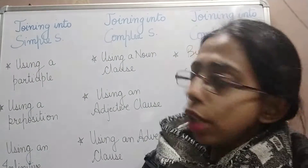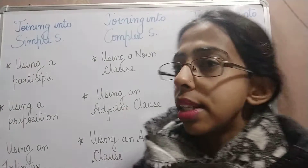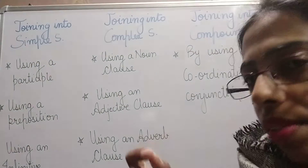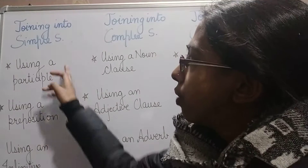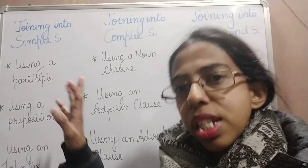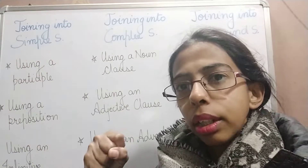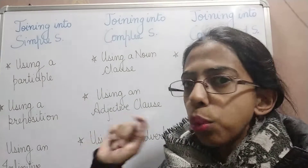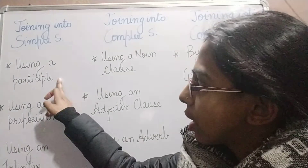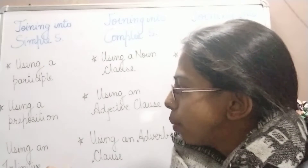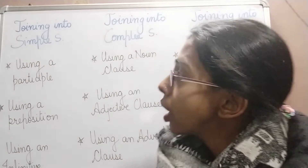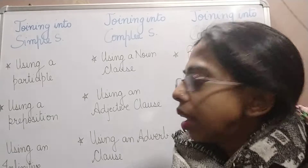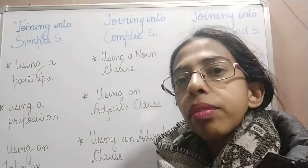First, how do we join two or more sentences into a simple sentence? The points we should remember are: we should use a participle, a preposition in between, or an infinitive when joining into a simple sentence.